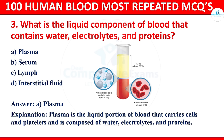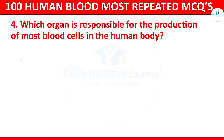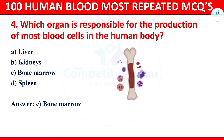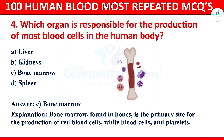Question 4: Which organ is responsible for the production of most blood cells in the human body? The options are liver, kidneys, bone marrow, or spleen. The correct answer is bone marrow. Bone marrow, found in bones, is the primary site of production of red blood cells, white blood cells, and platelets.